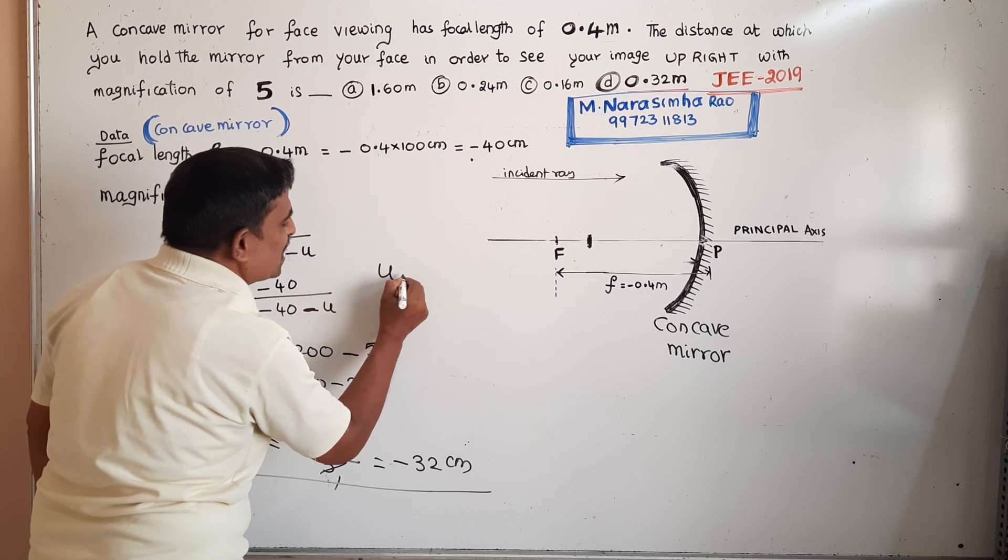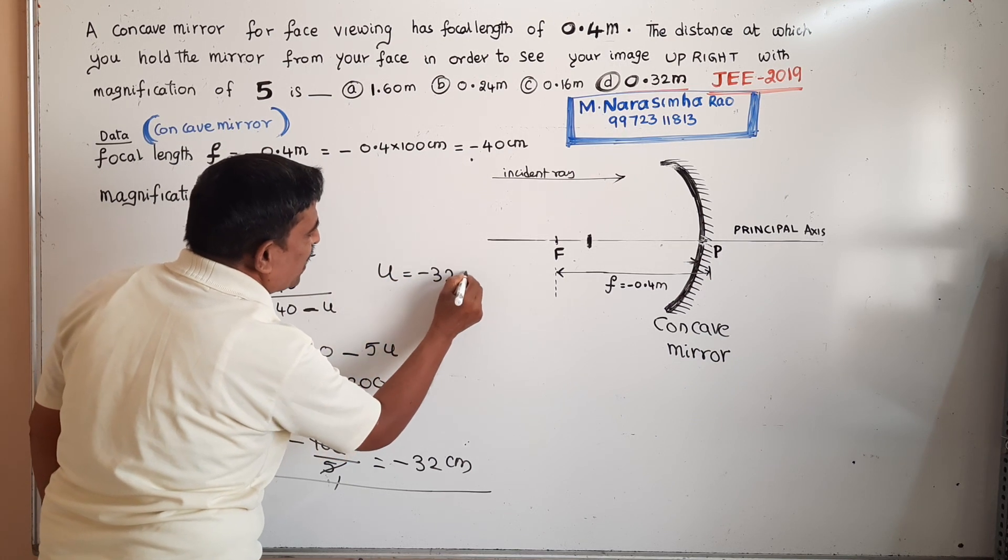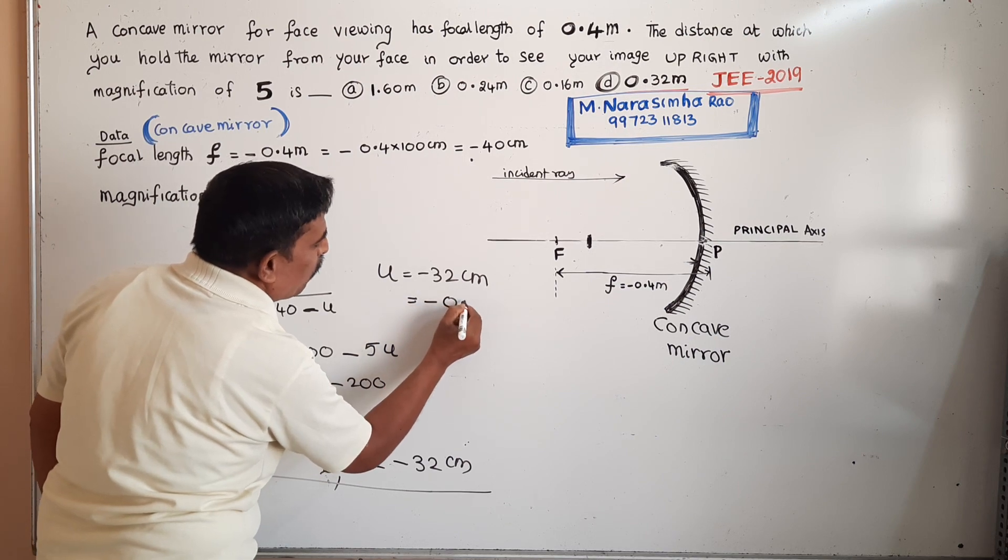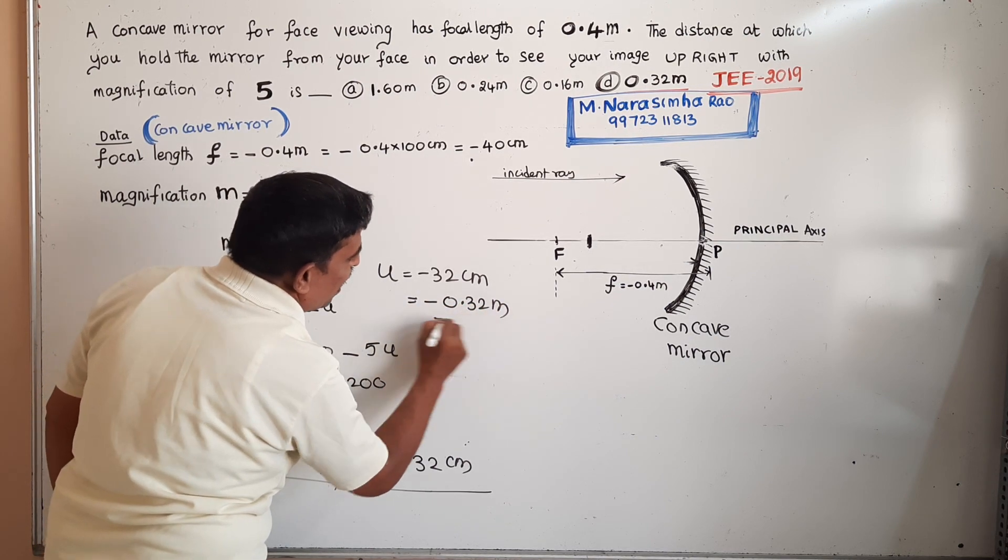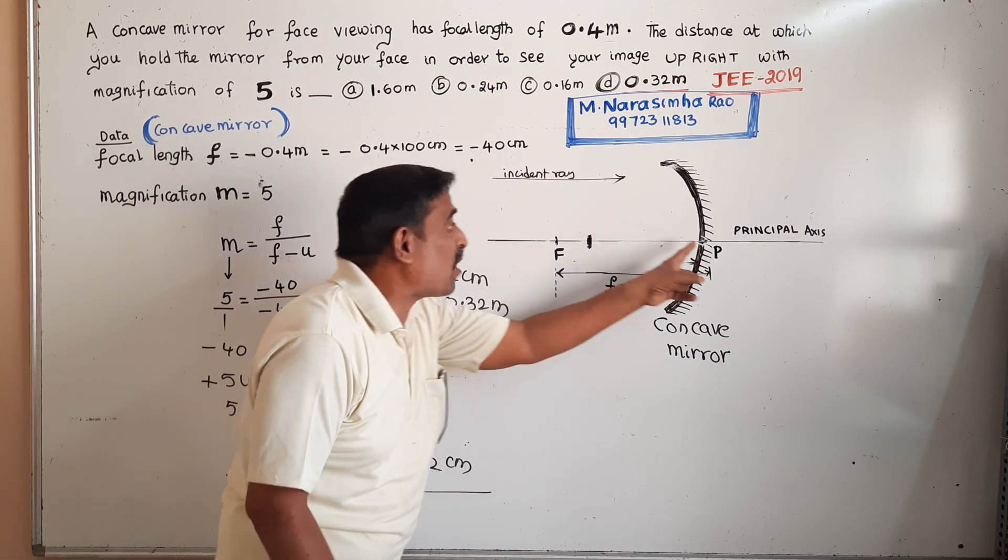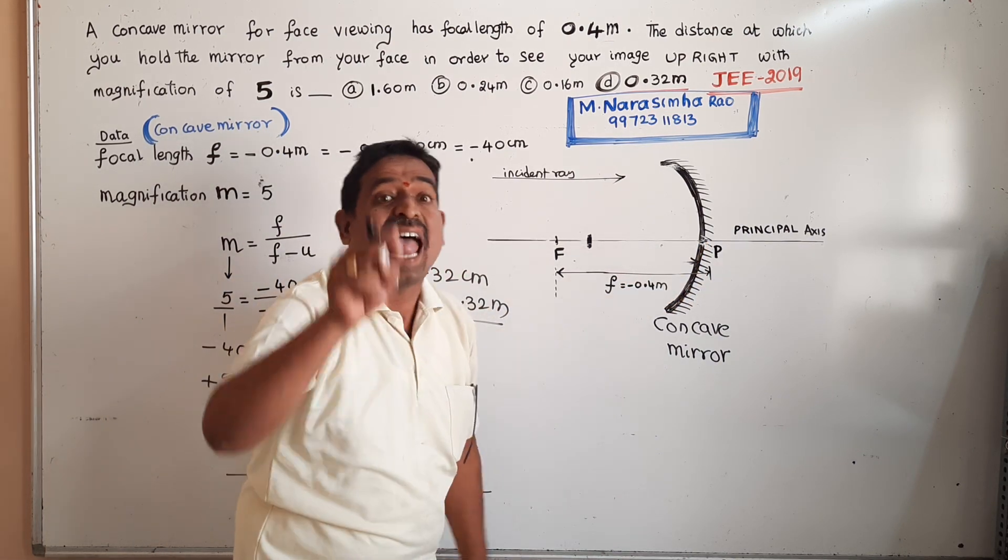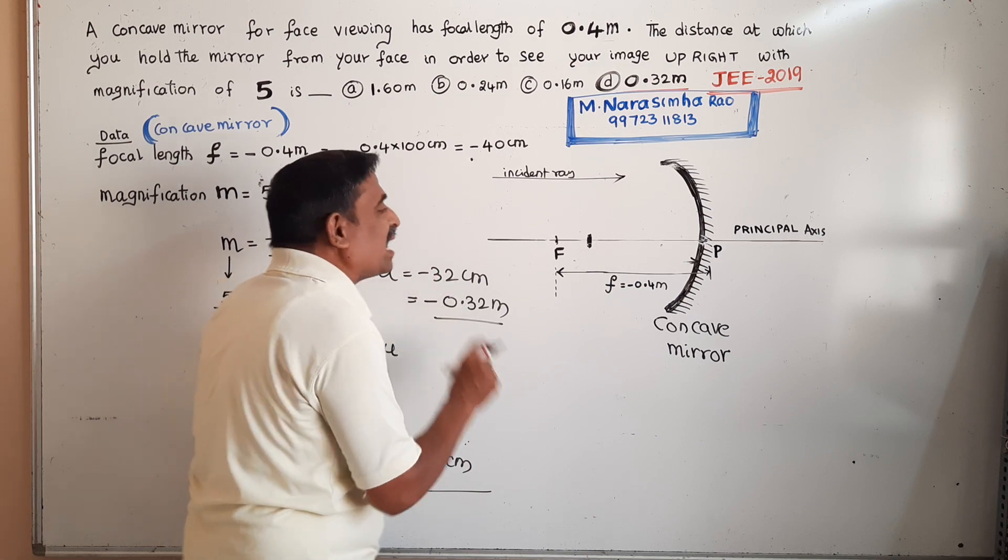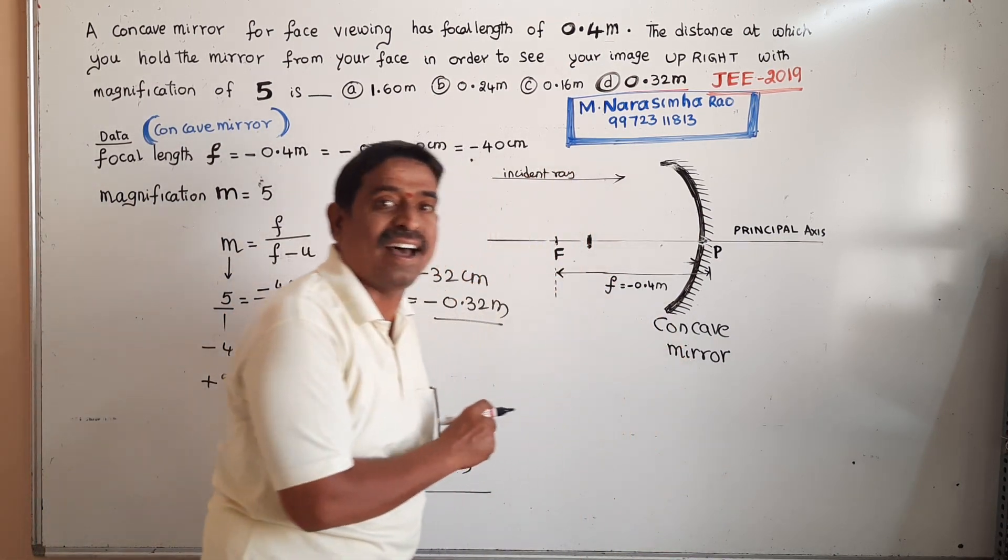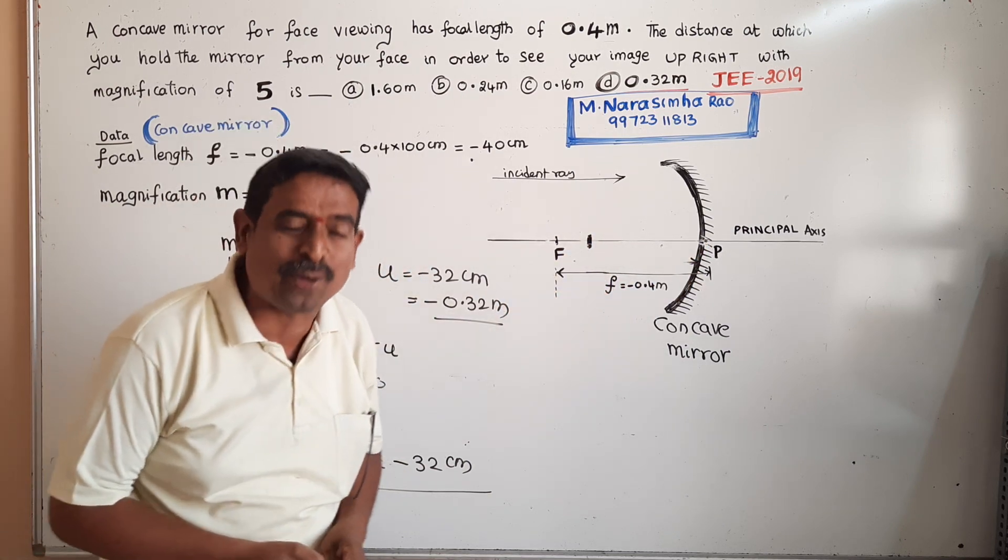Object distance u equals minus 32 centimeters, or minus 0.32 meters. We have to keep our face in front of the concave mirror at a distance of 32 centimeters from the pole of the mirror. Thank you.